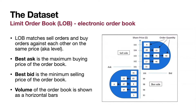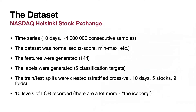Our dataset has snapshots of a limit order book. The limit order book changes every minimal time delta the market allows — let's imagine it is one millisecond. So every millisecond there will be a different state of the limit order book. The data is a sequence in time of the states of the LOB. One state is called a snapshot, so the data is a sequence of snapshots forming a time series. The total amount of data is 10 days, with almost 4 million consecutive samples.